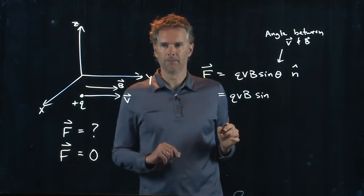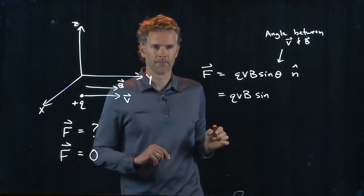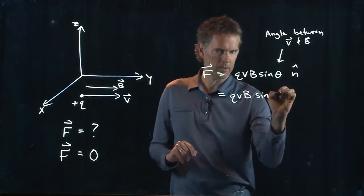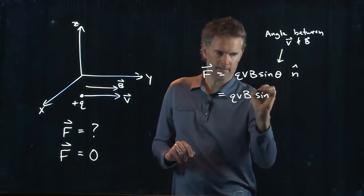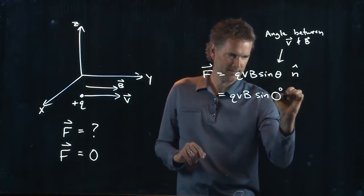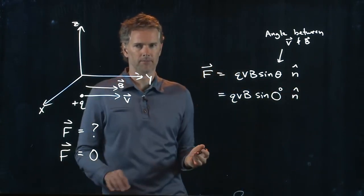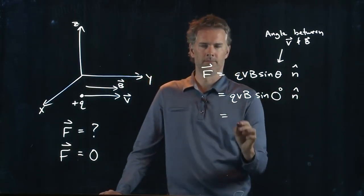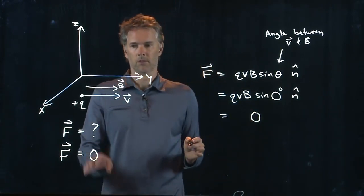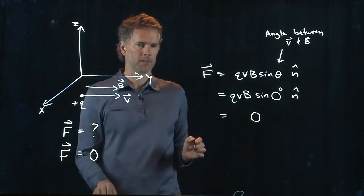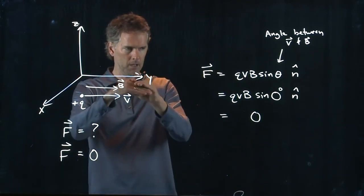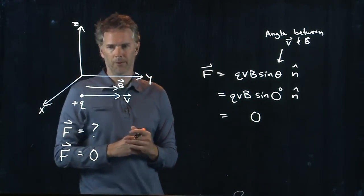What's the angle between V and B? Zero. There we go. What's the sine of zero? The sine of zero is zero. There is no force. If V is in the direction of B, there's zero force on the particle.